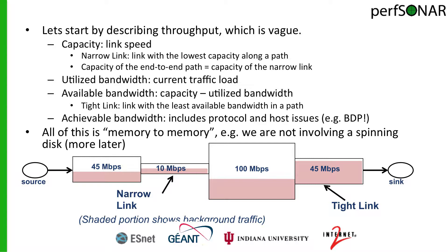The second term we need to define is utilized bandwidth, which means the current traffic load. Much like with capacity, we need to define this for every single link along the path as well as for the entire end-to-end path. Each link has a different utilization, represented by the shaded pink area. The first link is a little less than half full, the 10 megabit per second link is about half full, the 100 is not quite half, and the last link is the most utilized right now.